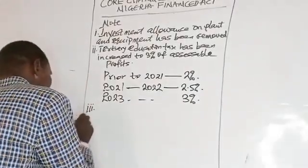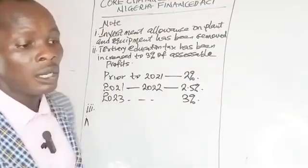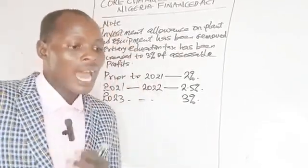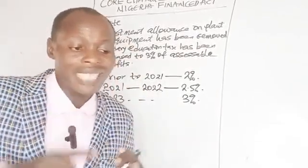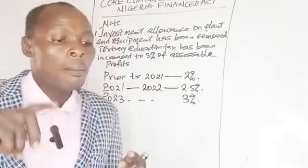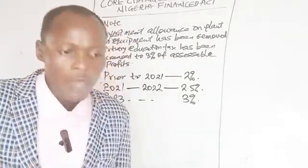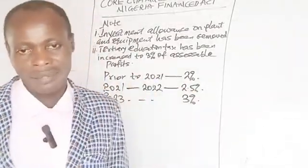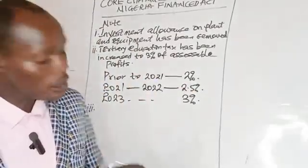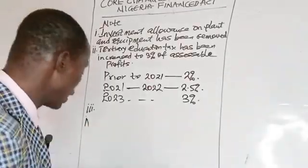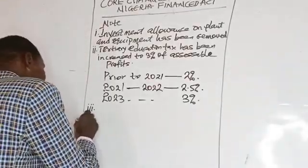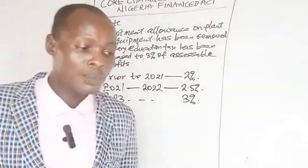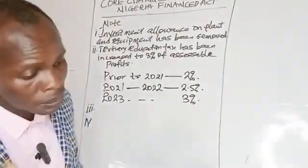Number four: deductions of capital losses on assets for capital gains tax purposes, for the same type of assets, may be carried forward for a maximum of five years. This is equally applicable to professional-level students, as capital gains tax is part of advanced taxation.